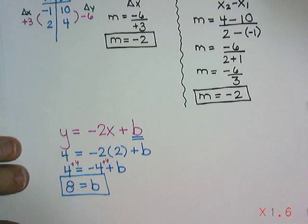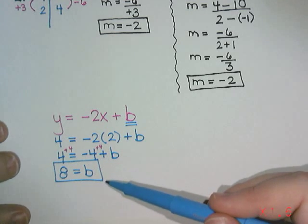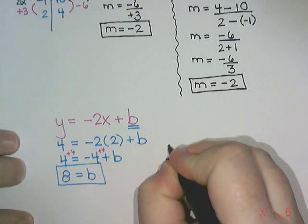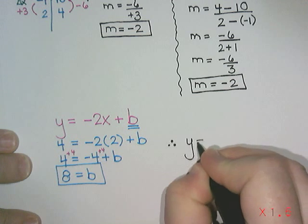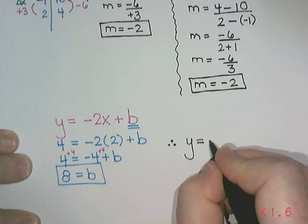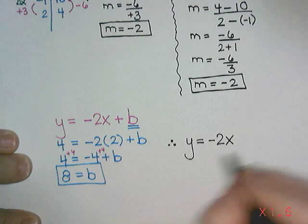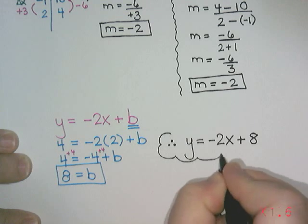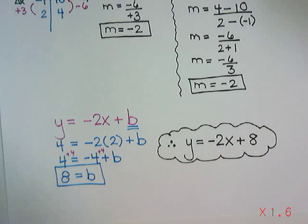So I now know that the slope is negative 2. The y intercept is positive 8. So I can write my final equation. So I'm going to write therefore that's what those three little dots stand for. My equation is y equals m. So negative 2x plus b which is 8.